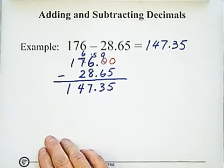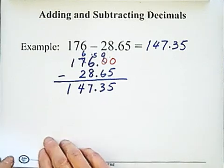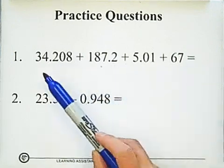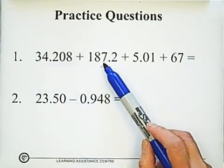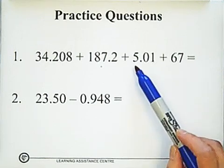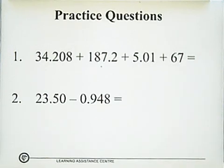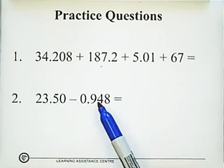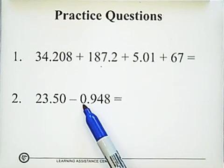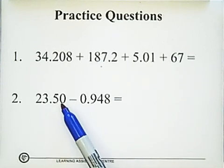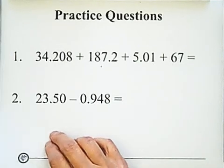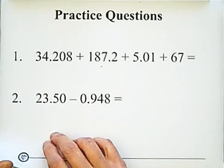Next, I want you to practice two questions. Just follow the rule: line up the decimal. 4 is the ones digit, 7 is the ones digit, 5 is the ones digit, 7 is the ones digit - line them up. In this one, 3 is the ones digit. The ones digit in this number is 0. The tenths digit is 5, the tenths digit is 9 here. After practicing, you can see our solutions.